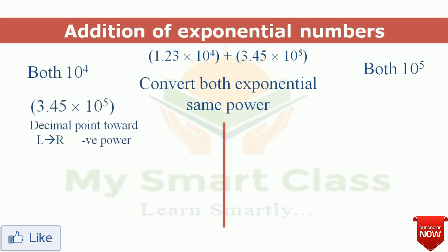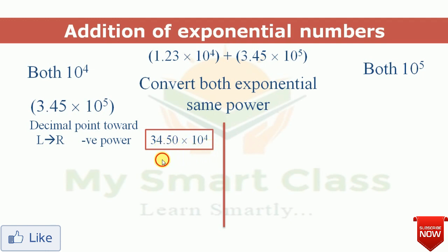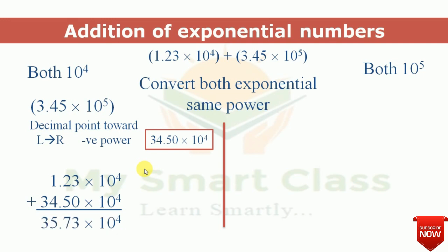To convert 3.45 × 10⁵ to 10⁴, we reduce the power by one, which means shifting the decimal point one place to the right. So 3.45 × 10⁵ becomes 34.50 × 10⁴. Now both numbers are at 10⁴: 1.23 × 10⁴ plus 34.50 × 10⁴. Adding them gives 35.73 × 10⁴.